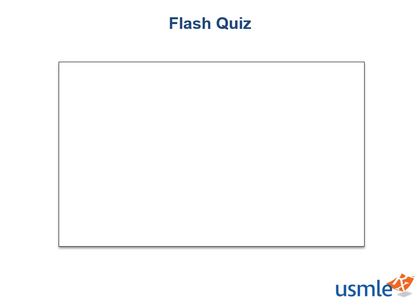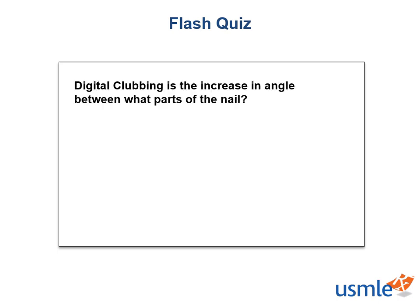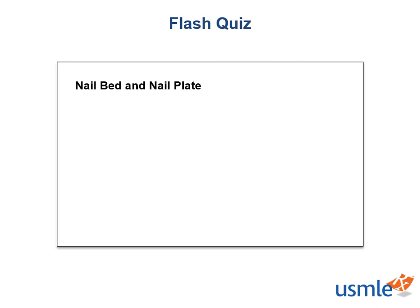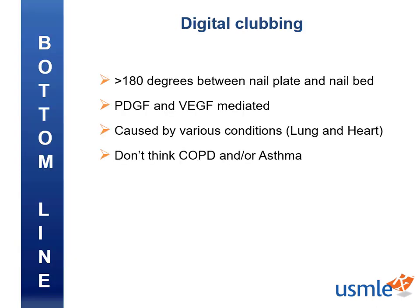Let's finish with a quick quiz. Digital clubbing is an increase in the angle between what parts of the nail? If you said the nail bed and the nail plate — you're correct. It's greater than 180 degrees. To summarize: digital clubbing is an increase in the angle between the nail plate and nail bed greater than 180 degrees. The mechanism involves megakaryocytes and platelets getting stuck in finger vasculature, releasing growth factors, caused by conditions leading to hypoxemia — such as lung and heart disease — but NOT COPD or asthma.